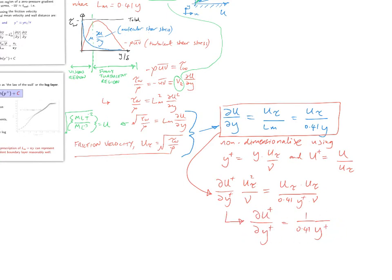This is just by collecting up the terms, and then we can solve this by moving the dy plus over to the right-hand side and integrating. And without too much trouble, we get the log layer, u plus is equal to 1 over 0.41 natural log of y plus plus a constant. And this is the log layer.